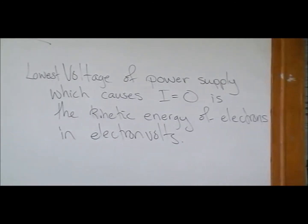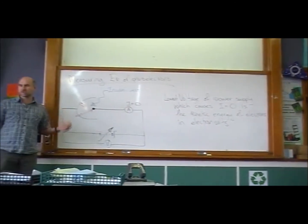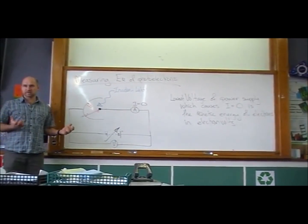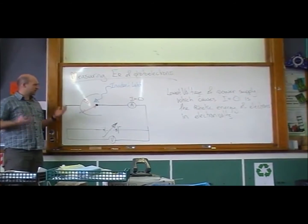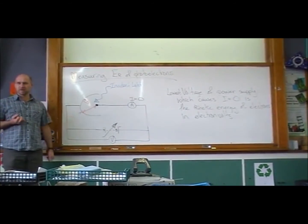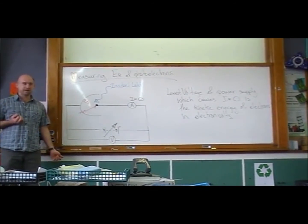So we've got a way of measuring the kinetic energy in electron volts. And so we start experimenting. And what's really interesting is we find that different things happen if we change the color of the light.